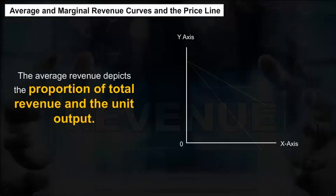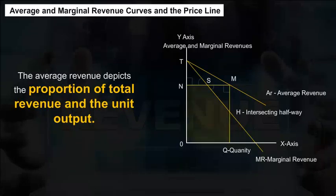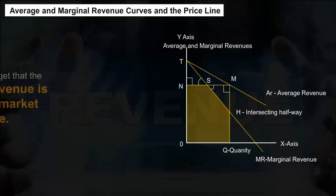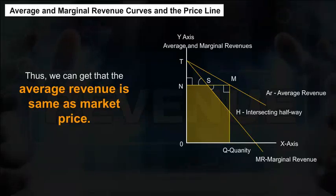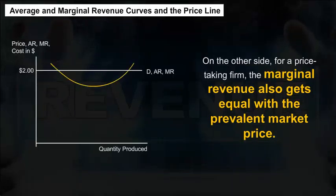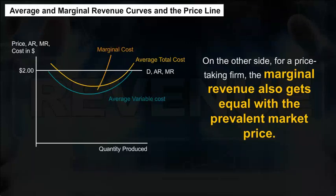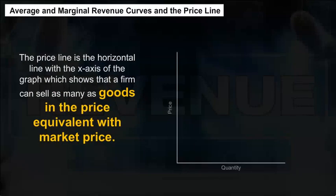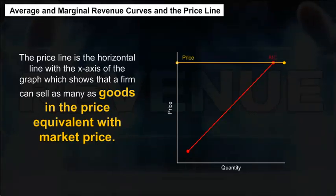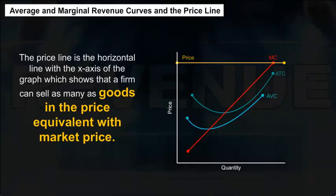Average and Marginal Revenue Curves and the Price Line. The average revenue depicts the proportion of total revenue to unit output. The total revenue is the product of the output and the market price. Thus, the average revenue equals the market price. For a price-taking firm, the marginal revenue also equals the prevailing market price. The price line is a horizontal line on the graph, showing that a firm can sell as many goods at the equivalent price.